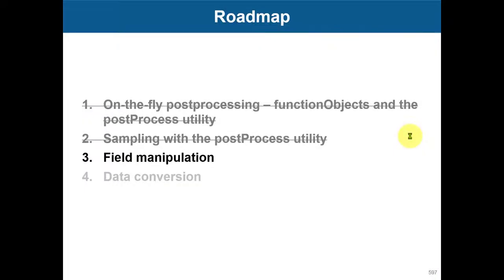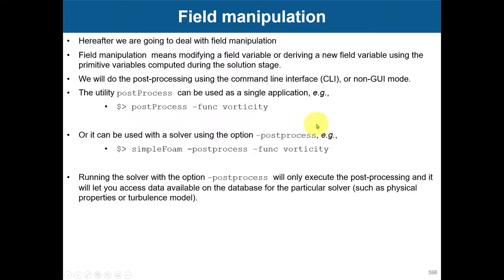Let's talk about field manipulation, which is still part of post-processing. Field manipulation means computing new fields from ones that already exist. We already saw something like this when we used the function object for vorticity — vorticity is something derived from velocity — and that's what we're going to cover here in more detail.